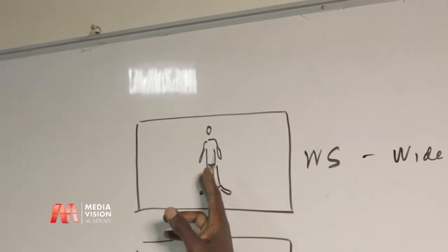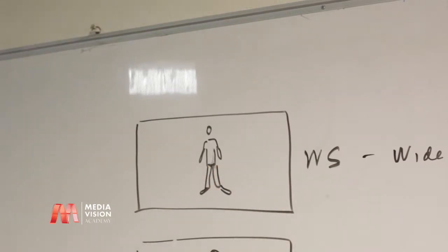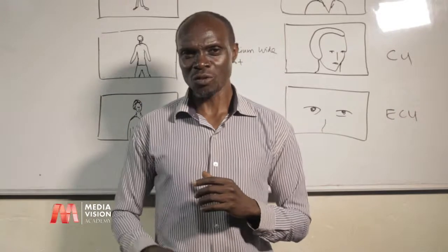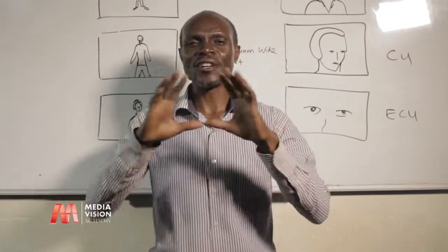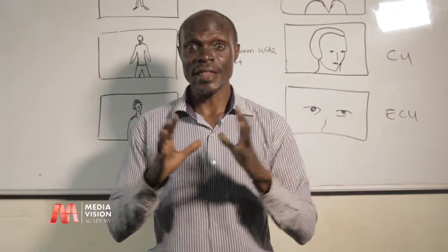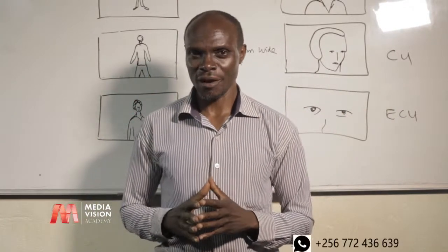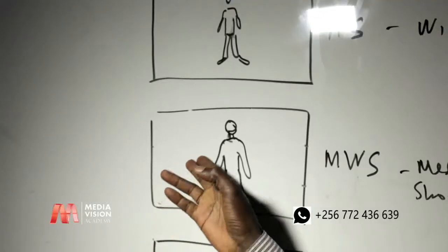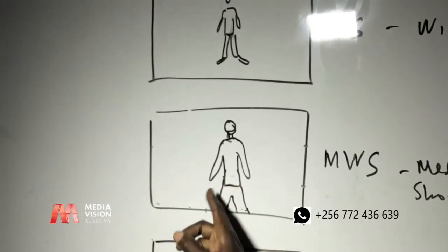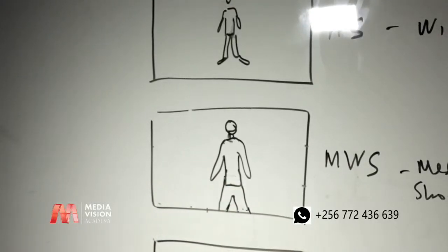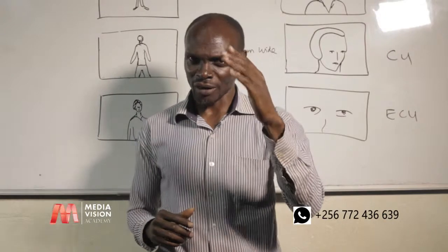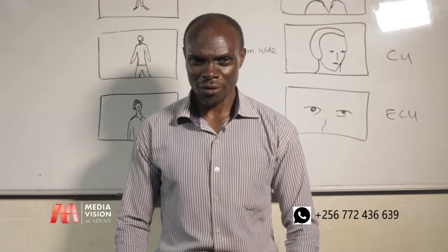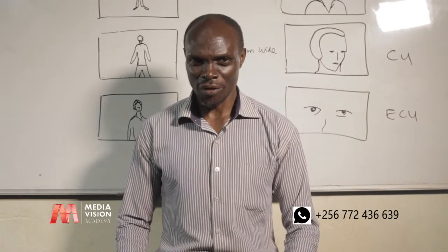A shot in which you take the subject right from the head to the toes and you can see them in the entire frame. Then we moved on to the medium wide shot. The medium wide shot is the shot that you take from the head to somewhere in the middle of the thighs.